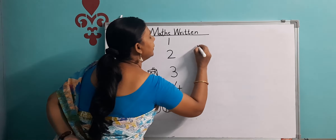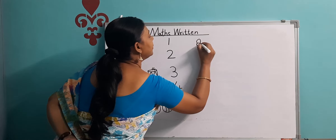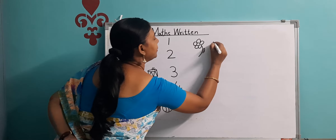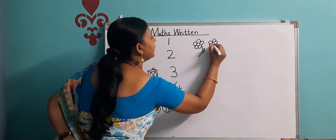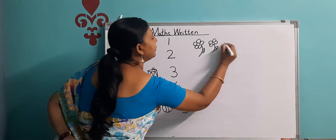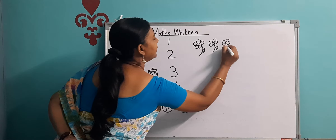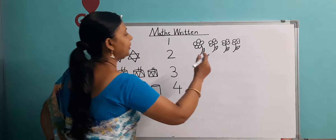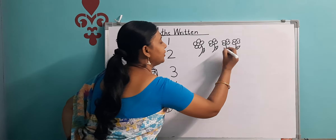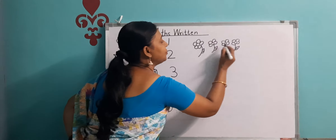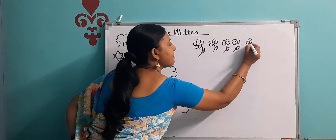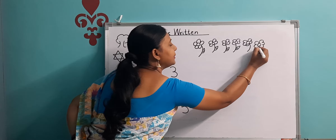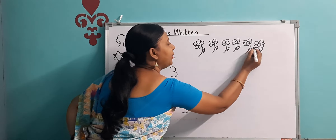So I will draw it over here. Now we will count. Yes, these are flowers. So we will count how many flowers are here. One, two, three, four, five, and six. So now, how many flowers are here?